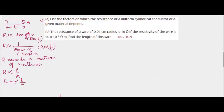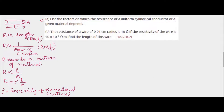Combining these two proportionalities, we get R varies directly as L by A, or R is equal to ρL/A, where ρ (rho) is the constant of proportionality known as the resistivity of the material, and it depends on the nature of material. So resistance depends on the length of the conductor, the area of cross section of the conductor, and the resistivity or nature of material of the conductor.